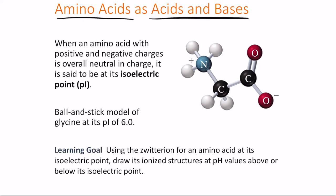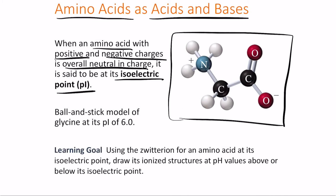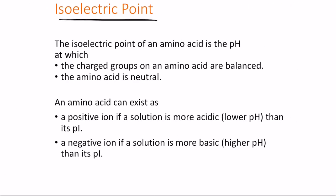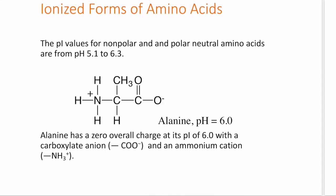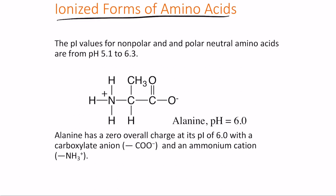Amino acids can act as acids or bases. An amino acid exists as a zwitterion at physiological pH and stays neutral at its isoelectric point (pI) — the pH at which the charged groups are balanced and the overall charge is zero. For example, glycine has a pI of 6.0. An amino acid is a positive ion when the solution pH is below its pI, and a negative ion when the solution pH is above its pI.